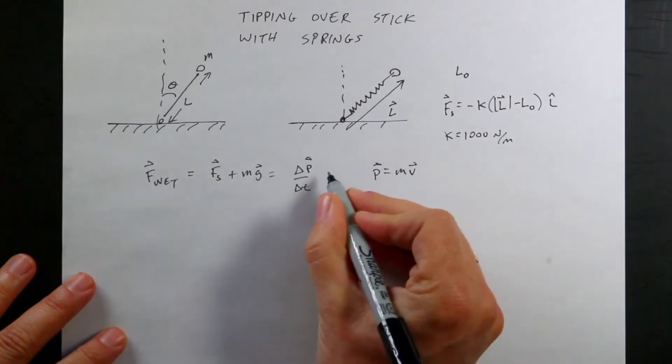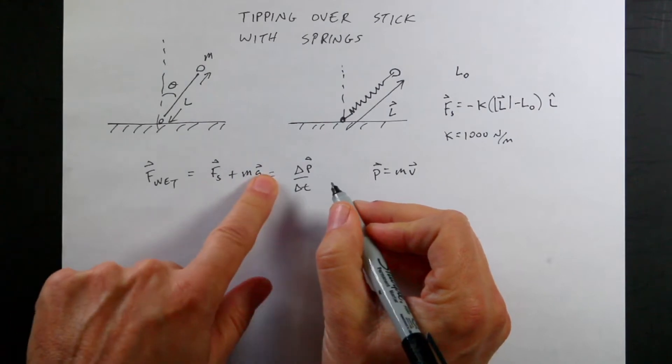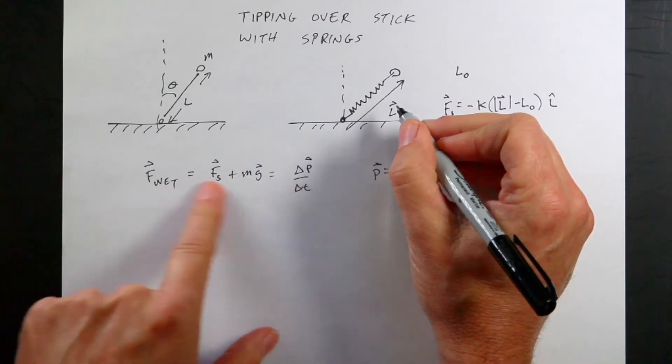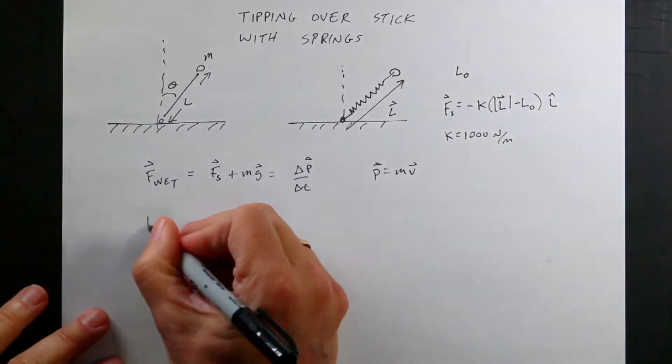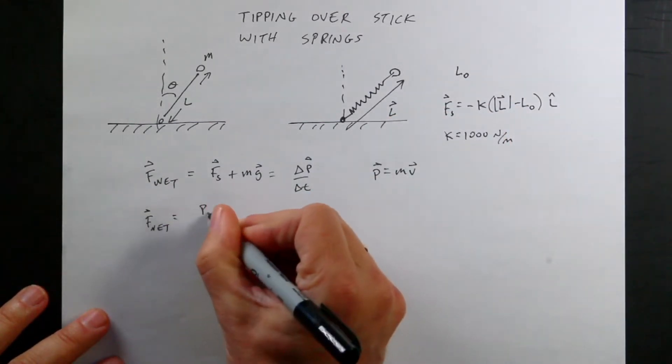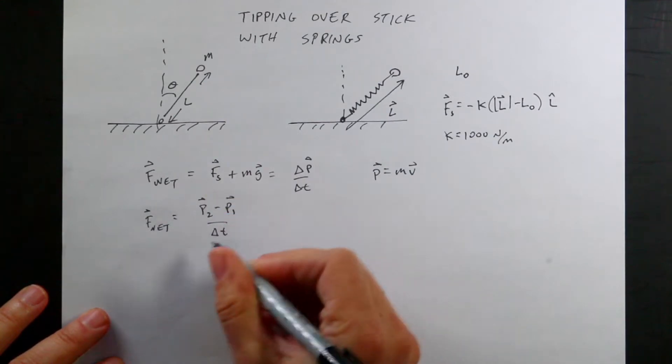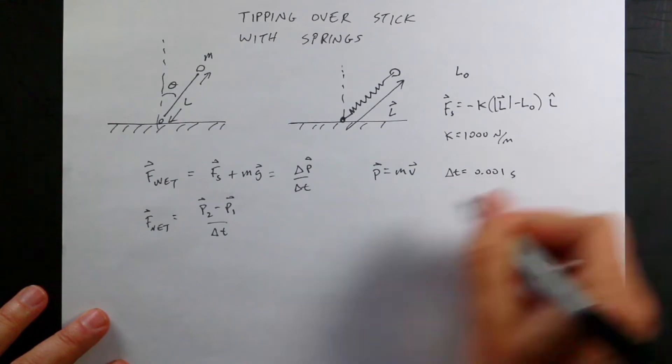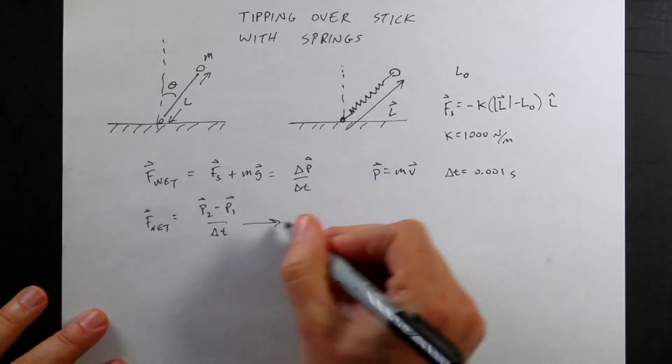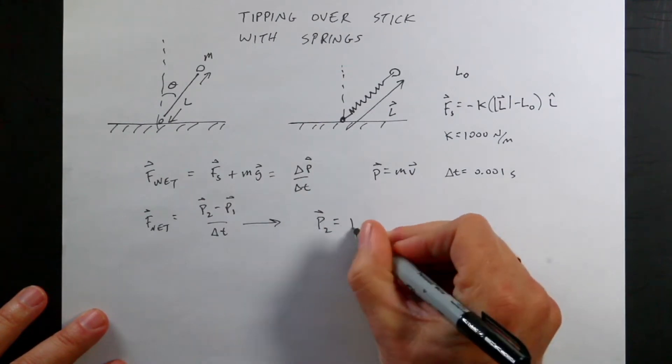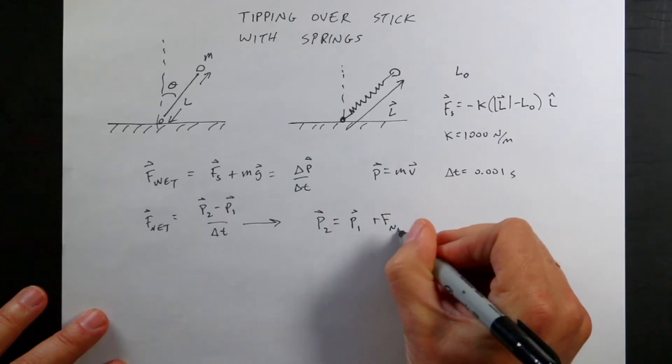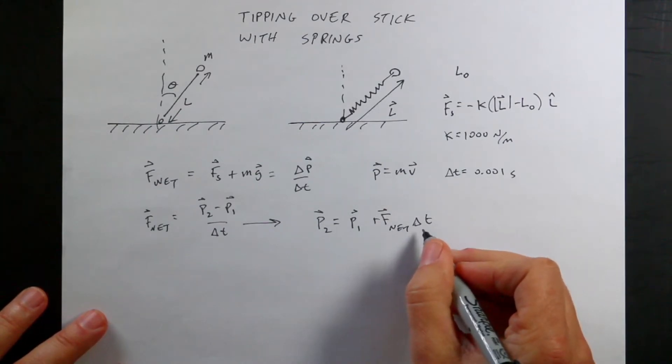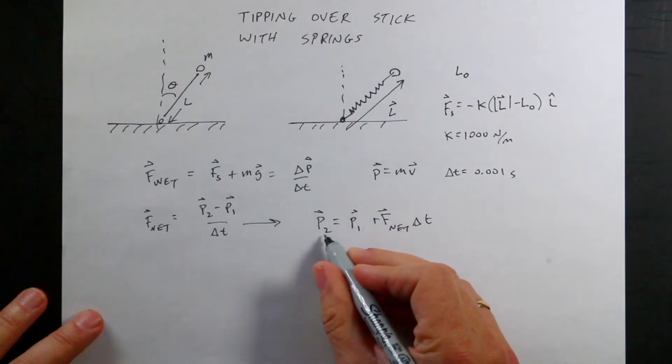So once I calculate the net force, it's not a constant force. Gravitational force is constant, but as this thing moves, the spring force is going to change too. So I can calculate this in a short time interval and assume that the force is constant. I can say F_net is P2 minus P1 over delta T, where that's the momentum at the beginning of the time interval. That's the momentum at the end. Let's say delta T is 0.001 seconds. And I can solve this for P2, and I get P2 equals P1 plus F_net delta T.